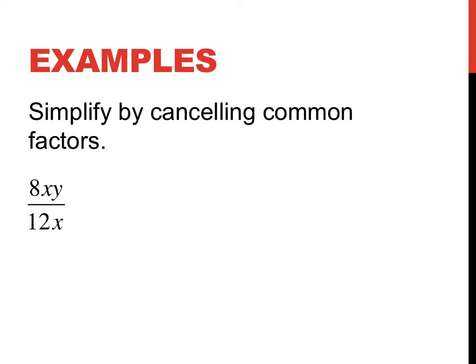You can simplify by simply cancelling out common factors. So if we've got an x on the top, we can cancel out an x on the bottom. The highest common number that goes into 8 and 12 is 4. 4 goes into 8 twice and into 12 three times. So this one simplified would be 2y on 3.